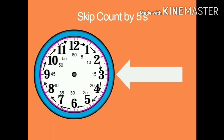From 12 to 1 it is 1, 2, 3, 4, 5. From 1 to 2 it will be 6, 7, 8, 9, 10. From 2 to 3 it will be 11, 12, 13, 14, 15. From 3 to 4 it will be 16, 17, 18, 19, 20. From 4 to 5 it will be 21, 22, 23, 24, 25. From 5 to 6 it will be 26, 27, 28, 29, 30.